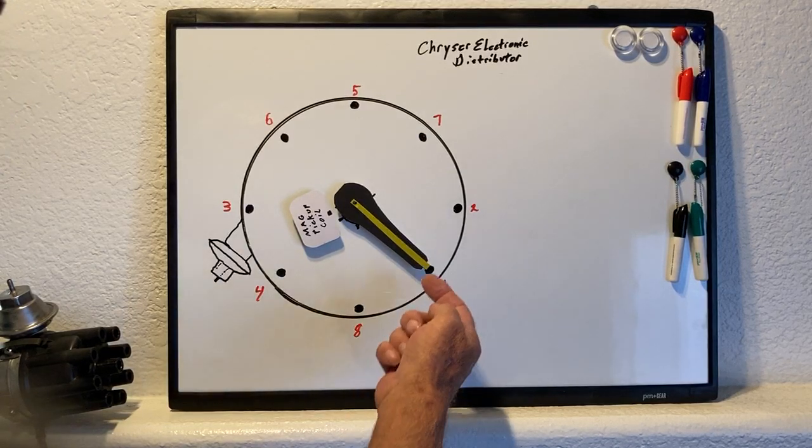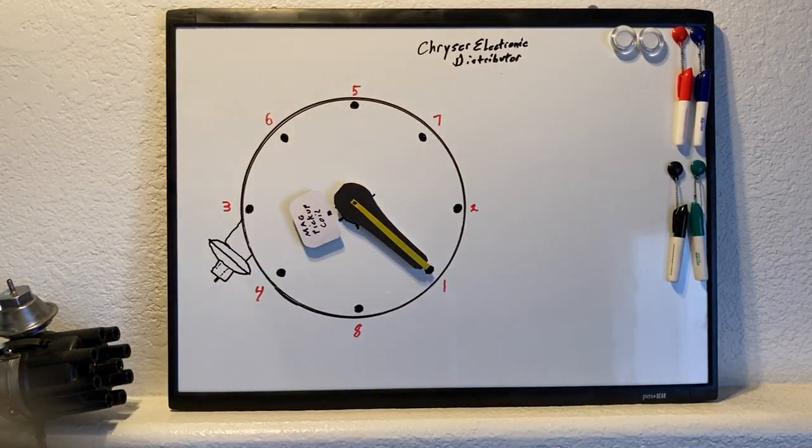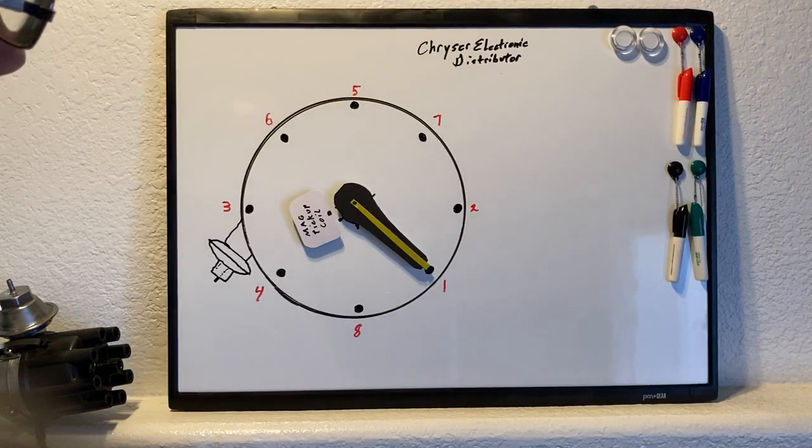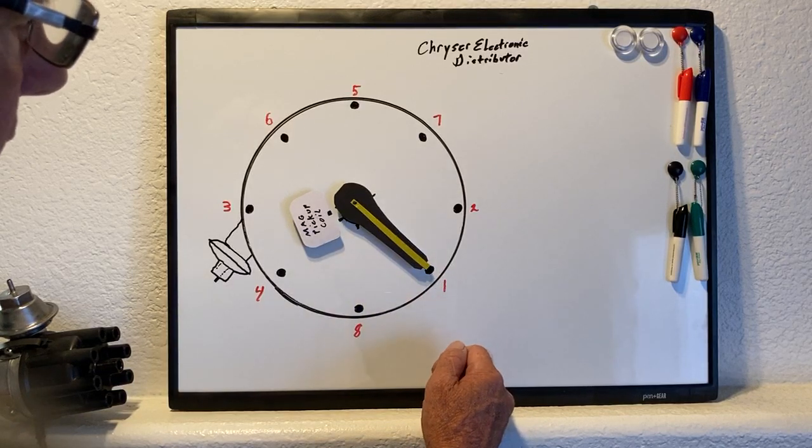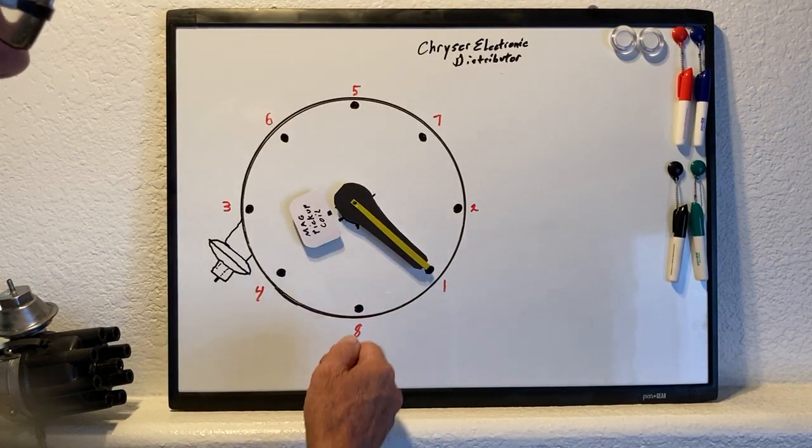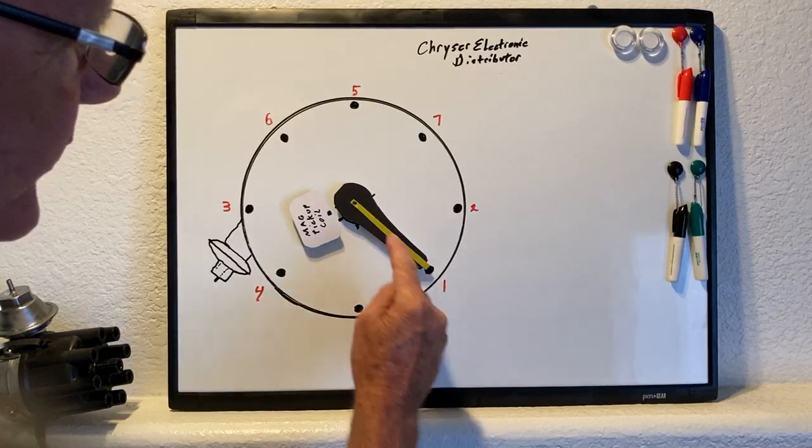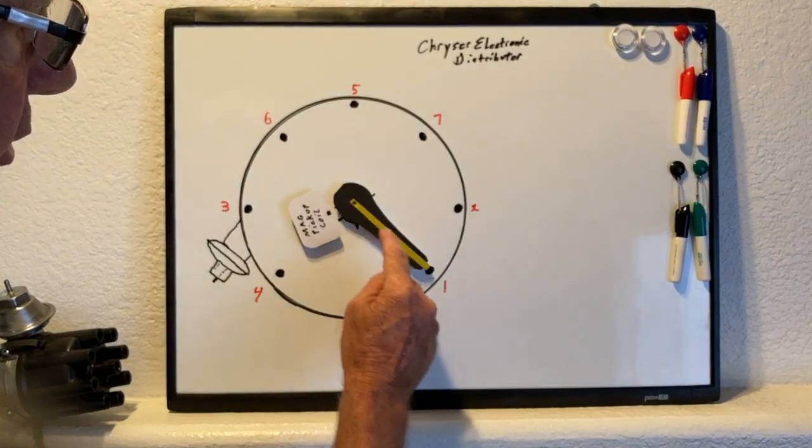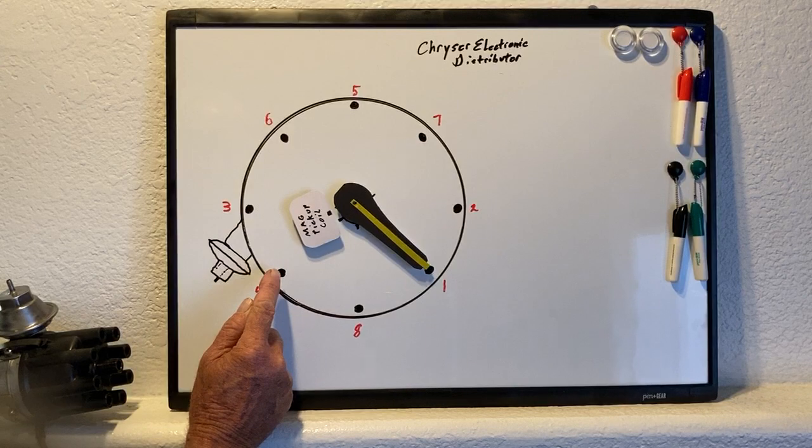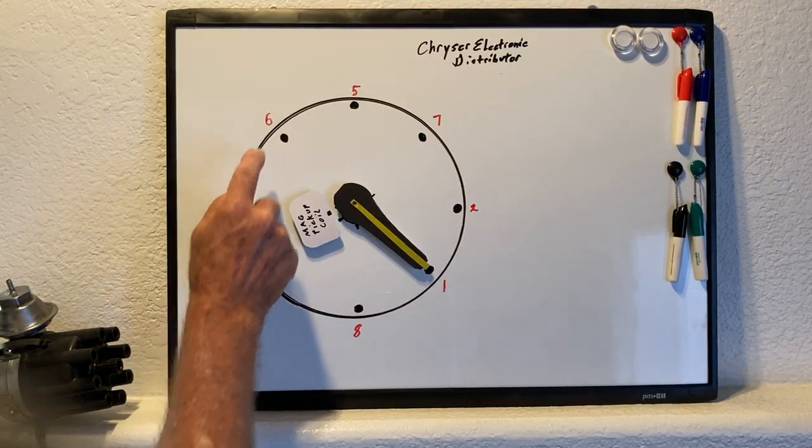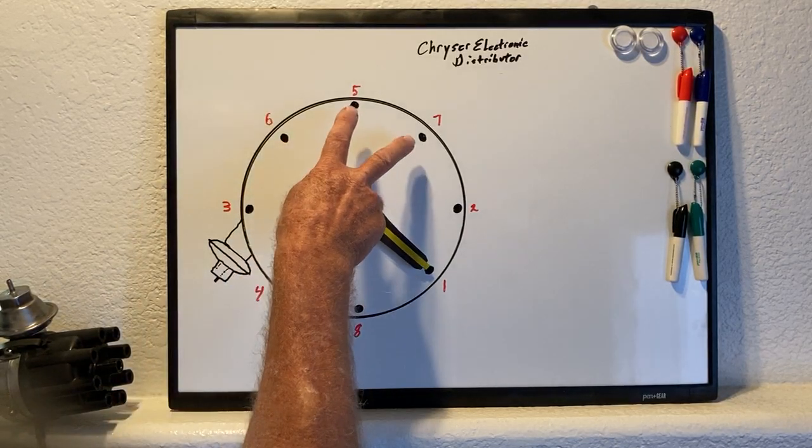Now we've got cylinder 1-8-4-3-6-5-7-2. That's the firing order for a small block Mopar. When you're putting spark plug wires in, you don't put this wire goes to the number one cylinder and this one goes to the number two cylinder. You don't do that. I've seen people try that and can't figure out why their car won't run. The number one wire, where this is at top dead center on the compression stroke on the motor, you start with there at number one. The number eight wire goes here, the number four wire goes here, the number three wire goes here, and so on around the distributor. That's to make sure your firing order is correct.